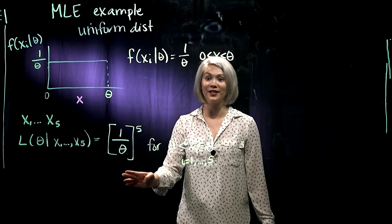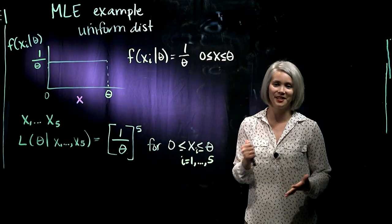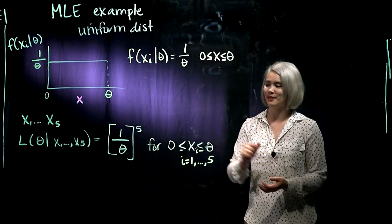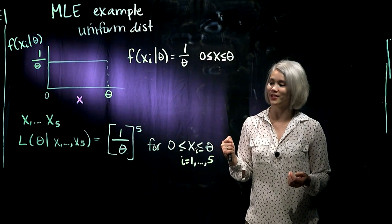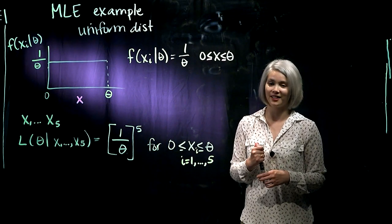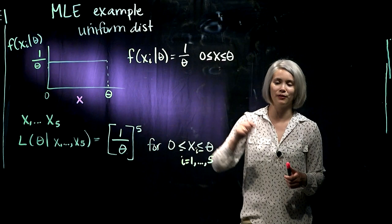And then we can write down our likelihood function. So our likelihood function, remember, is that joint PDF. Here we have independent samples. So we can just take the product of the univariate PDFs.